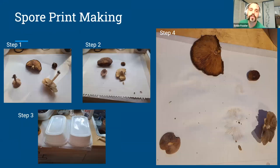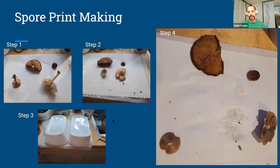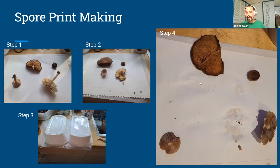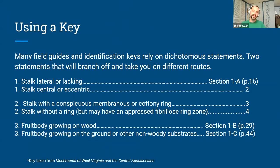To make a spore print: remove the stalk so the cap can lay flat on paper, glass, aluminum foil, or any flat surface. Cover it to limit airflow — you don't want a fan nearby or the print will be very faint. After about an hour you can turn the caps over to see the spore print. In this example you can see a brown spore print, a slightly more rusty one, and a pink spore print. Spore prints are fairly light after just an hour but they're really fun to do — you can even use them as art.